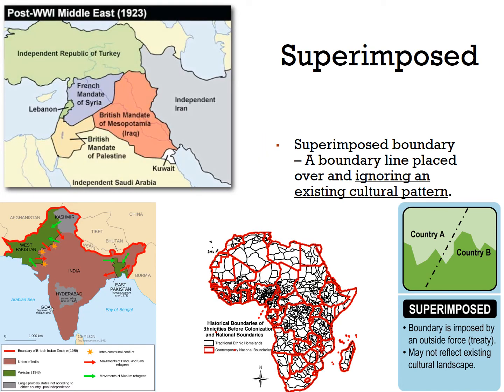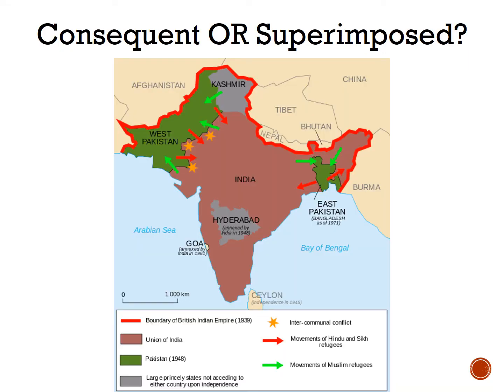Most places that were colonized have examples of superimposed boundaries. The British and French mandates in the Middle East after World War I illustrate these superimposed boundaries. The partition of India was also superimposed. The cartographer responsible for drawing the lines between India and Pakistan attempted to create a consequent boundary by looking at census data and drawing lines based on religion. But the reality was an outside force imposed boundaries that forced millions of people to migrate, leading to violence as people attempted to get to a state that shared their religion.